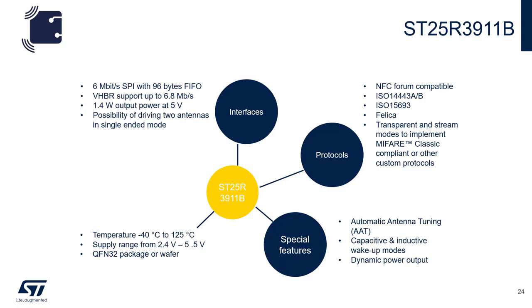The 3911B has an SPI that can handle up to 6 megabits per second and also has a 96-byte FIFO. It can handle data rates up to 6.8 megabits per second and can supply up to 1.4 watts of output power at 5 volts. The output of the device is differential; however, it can be configured to run two single-ended antennas.